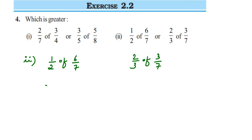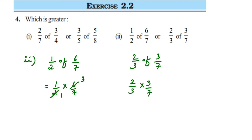1/2 of 6/7 means 1/2 × 6/7. We can cancel 2 and 6: in the 2 table, 2 threes are 6, leaving 1 and 3. Multiplying numerators: 1 × 3 = 3; denominators: 1 × 7 = 7. So the first number is 3/7.